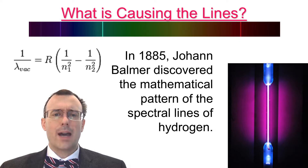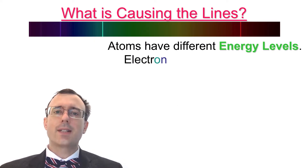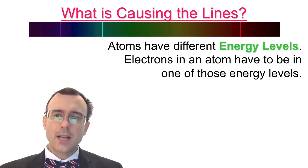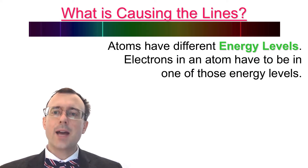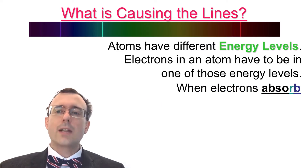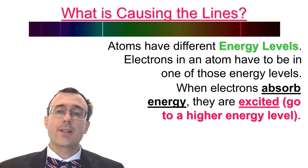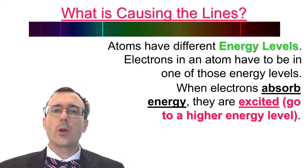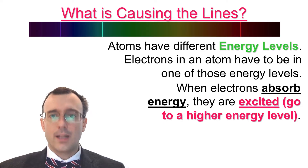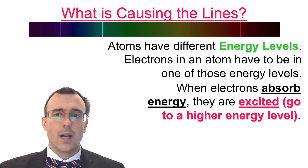Not only are there different colors and lines of colors, but those lines fit a mathematical pattern. What's causing this mathematical pattern? It turns out that the answer is that atoms have different energy levels. Electrons in an atom have to be in one of those energy levels. When electrons in an atom absorb energy, they're excited, meaning they go to a higher energy level.